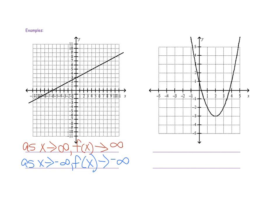Now let's look at our next example — this time we have a quadratic graph. Our first end behavior statement has to do with the x value increasing. So what is the f of x value doing if the x value is increasing? It's also increasing — that's how we get this curve going upward towards the right. So we write: as x approaches positive infinity, f of x is also approaching positive infinity.